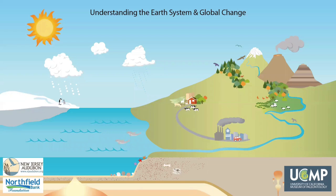When you go outside, what do you notice? Do you notice the smell of the air or feel the warmth of the sun? See the clouds or blue sky? Hear birds singing or trees moving in the wind? Hear or see cars and people in the streets? The world is made up of many parts that interact to shape our everyday experiences. Many of the processes that determine how the world looks today have been happening for millions of years throughout the history of our planet.